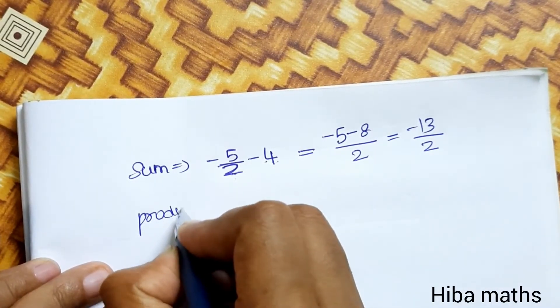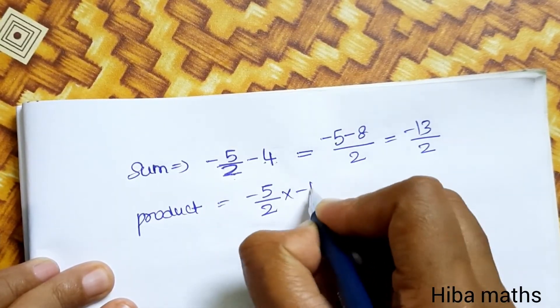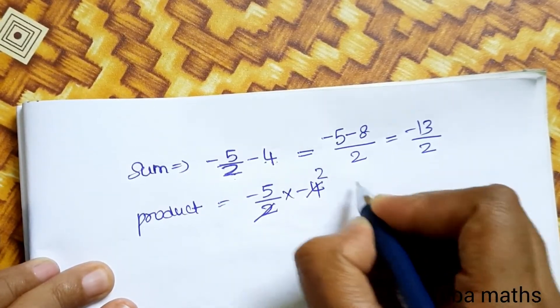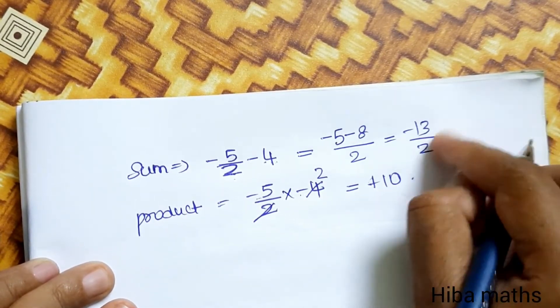Product of the roots: -5/2 × -4. Minus into minus is plus, so 5 × 4 / 2 = 10.